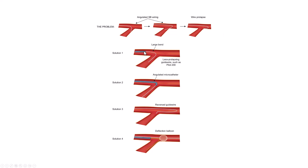Here are four solutions. First, use a different guide wire — for example, a polymer-jacketed wire like the Pilot 200 or the Glidewire with a large bend. Second, use an angulated single-lumen microcatheter such as the Venture or the Supercross. Third, use the reverse guide wire technique. Fourth, use a balloon inflated at the takeoff of the branch so that the guide wire is deflected off the balloon and advanced into the side branch.